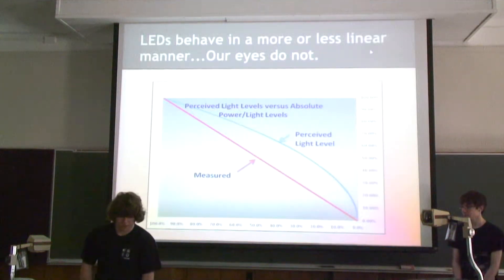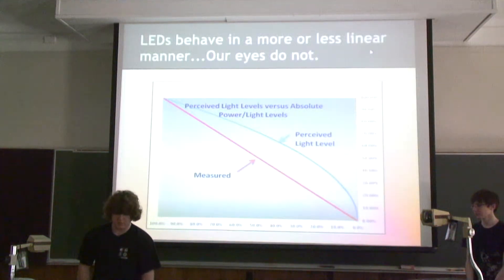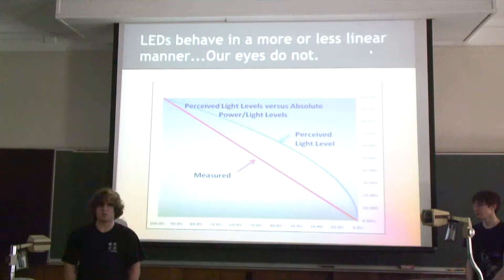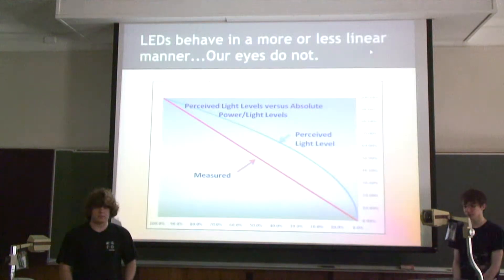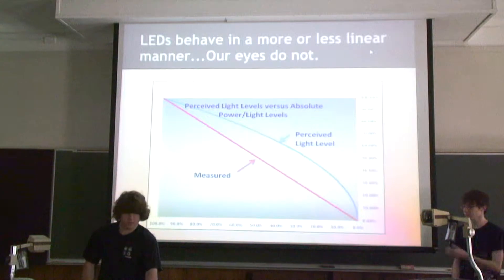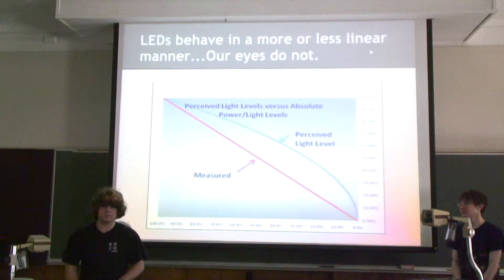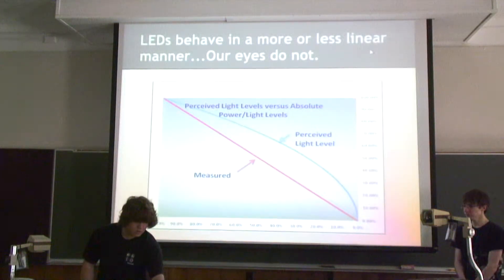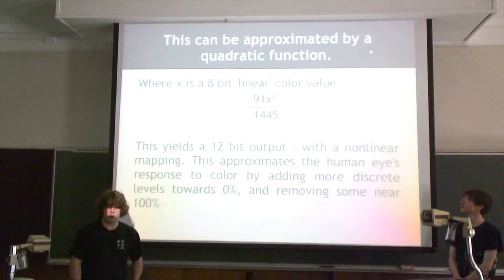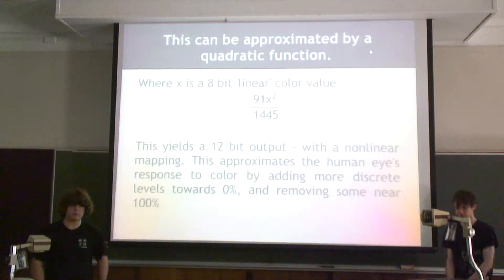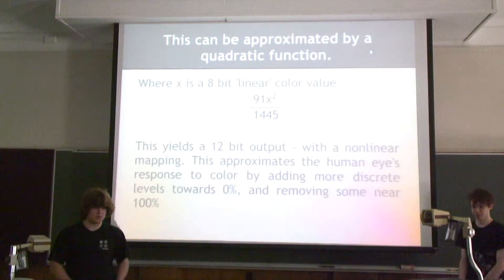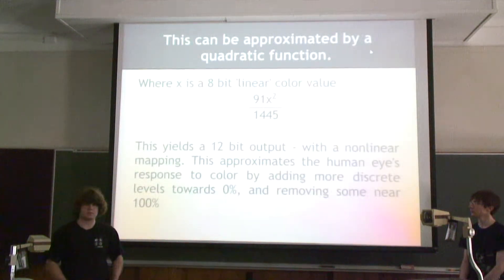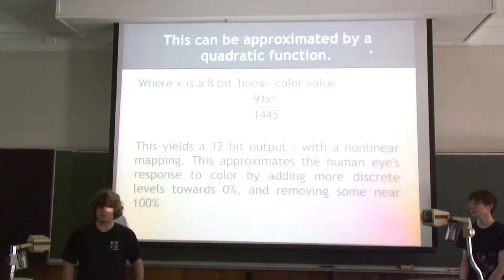This is because our vision allows us to see better at night, giving us more dynamic range. There are various color spaces such as sRGB that account for this non-linearity and also for differences in eye sensitivity for different colors. For this board, you can approximate the correction with a quadratic function that takes an 8-bit input and outputs a 12-bit color value. So it's a 12-bit PWM output but the steps are non-linear, giving you many more steps near 0% and fewer steps near 100%.